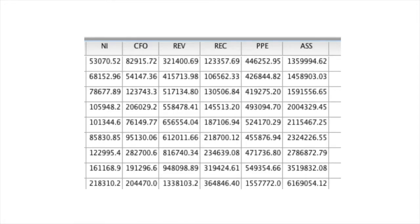Like all the previous illustrations, we will still have the same variables specified in the model: net income, cash flow from operations, gross revenues, accounts receivable, property plant and equipment, and total assets.